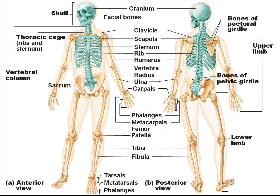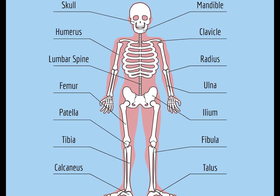This is the anatomy of the skeletal system. In the skeletal system, the main skeletal component is bone. Bones compose a unique skeletal system for each type of animal.